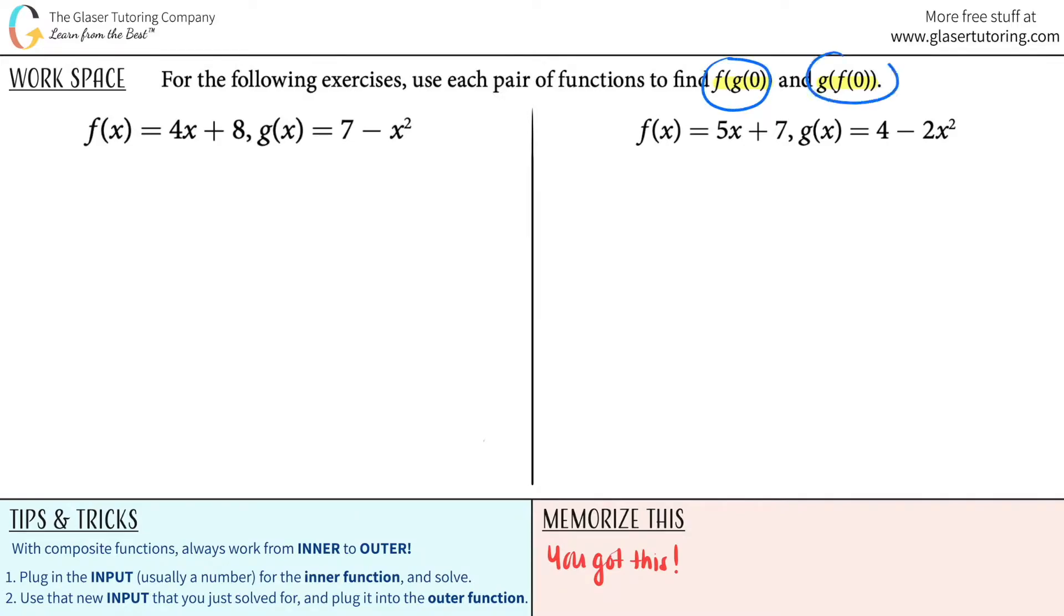It looks like we have to do both composite functions. So we have to do f of g of 0 and g of f of 0. We've worked with tons of composite functions already in this playlist. We know that with composite functions, we always work from the inner function to the outer function. Inner function to outer function is all about parentheses. So let's do the first one first.